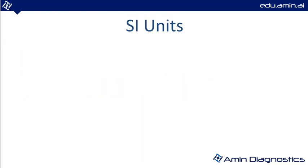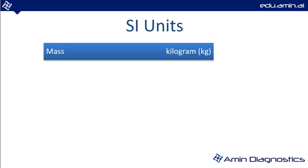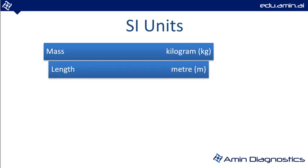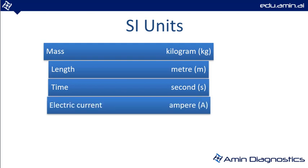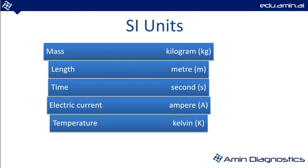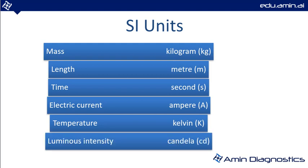The first review starts with SI units. The first SI unit is mass, which has the SI unit kilogram. For length we use meter, for time it's seconds — we'll be using microseconds and milliseconds. For current we use ampere, the SI unit of temperature is Kelvin, and the luminous intensity unit is candela.